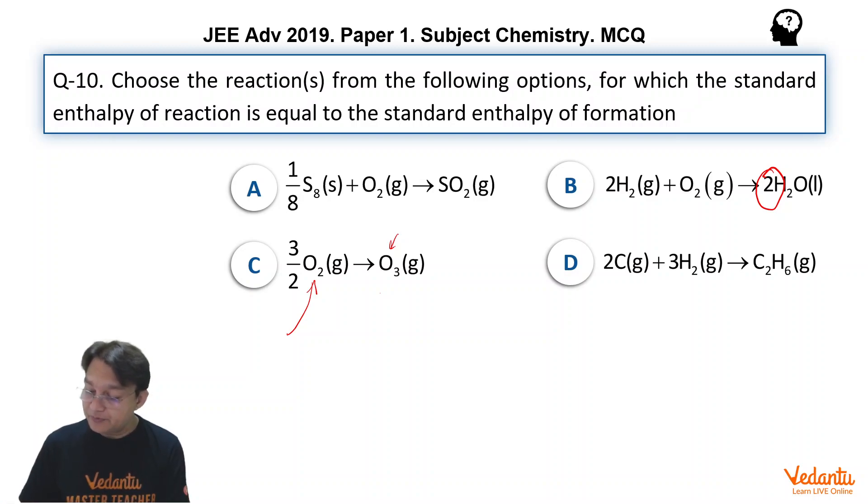And the fourth option is 2C gas plus 3H2 gas going into C2H6 gas. Now, here carbon needs to be in the most stable state which is graphite, not the gas. So, since it is gas, it is not graphite. That means it also does not qualify for enthalpy of formation.